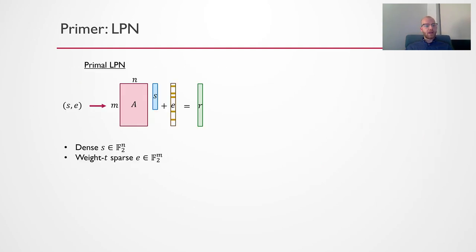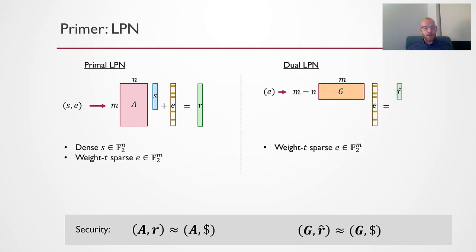By way of doing this, we're going to introduce what's known as primal LPN. This is how it's traditionally thought of. Here you have a public matrix A. It's a large random matrix. Then someone takes their seed S and E. These are vectors as shown here. S will be uniform and random, but somewhat short, while E is sparse, but longer. So you'll do A times S plus E, and this gives you R. Now LPN says that R should be indistinguishable from uniform and random, given that the matrix A is public. In our work we'll use what's known as the dual formulation. Here we have a matrix G, and we'll just do G times this sparse vector E. This gives us a short, ideally uniform and random vector R hat. The security statement is somewhat similar, that G and R should be indistinguishable from uniform and random.